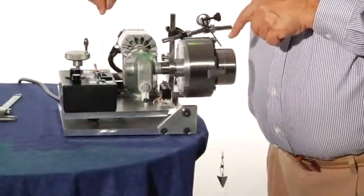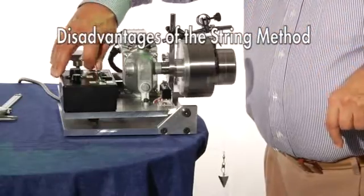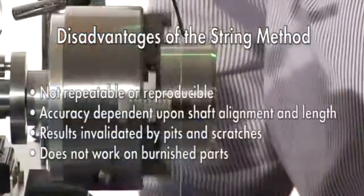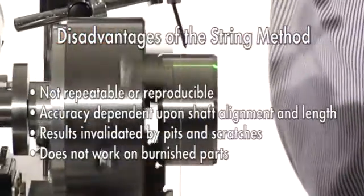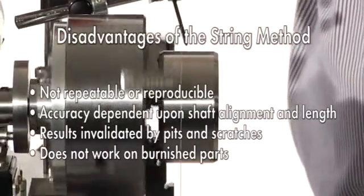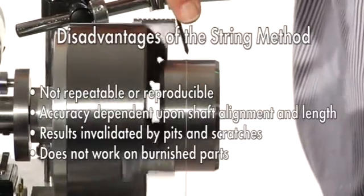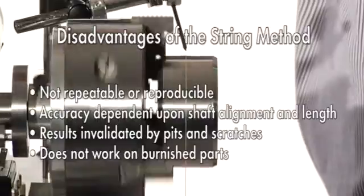Although this string method has been the industry standard for over a decade, it has widely known disadvantages and failings. It has proven to be qualitative rather than quantitative because the results can vary from operator to operator and depend heavily on the level and wobble of the shaft at setup, as well as the surface finish of the shaft during measurement.